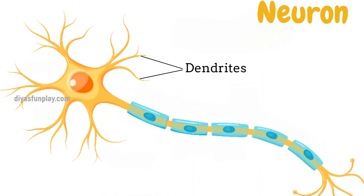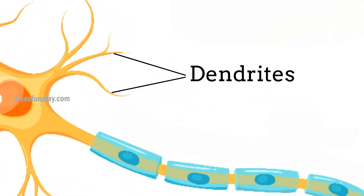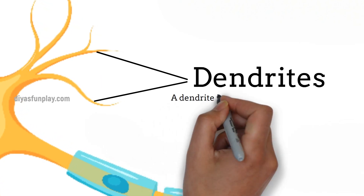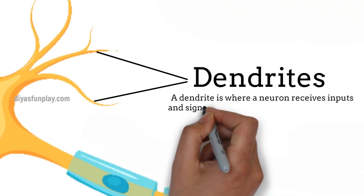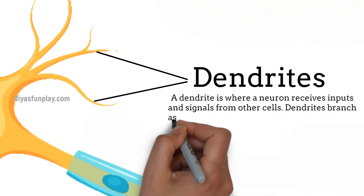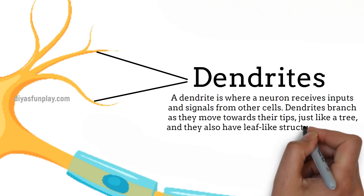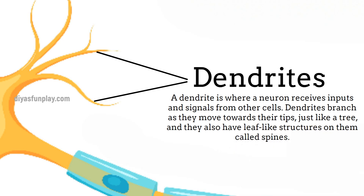Dendrites. The dendrite is where a neuron receives input and signals from other cells. Dendrites branch as they move towards their tips, just like a tree, and they also have leaf-like structures on them called spines.